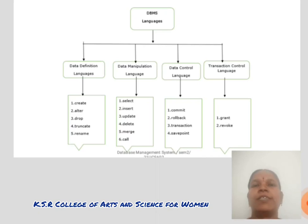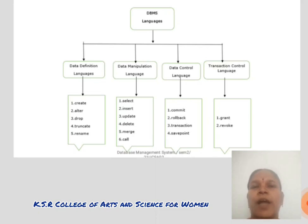Database languages consist of four types: Data Definition Language, Data Manipulation Language, Data Control Language, and Transaction Control Language. Data Definition Language uses the following queries: CREATE, ALTER, DROP, TRUNCATE, etc. Data Manipulation Language uses the following queries: SELECT, UPDATE, ALTER, DELETE, etc.